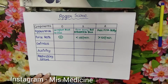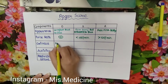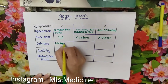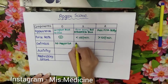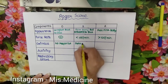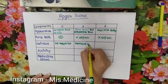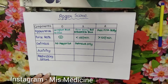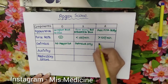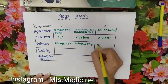Next is grimace, which is a response to stimulation of the oropharynx by a catheter. If there is no response, the score is 0. If there is grimace only — a change in expression — the score is 1. If the baby coughs or sneezes, the score is 2.